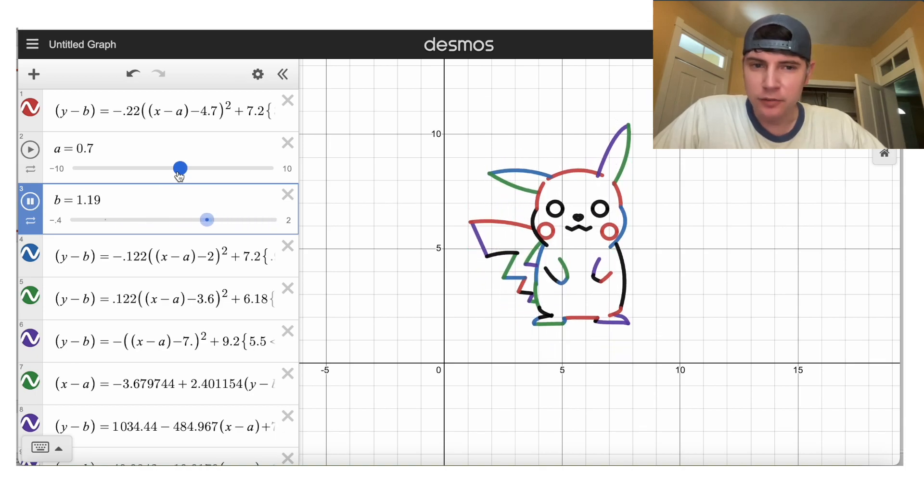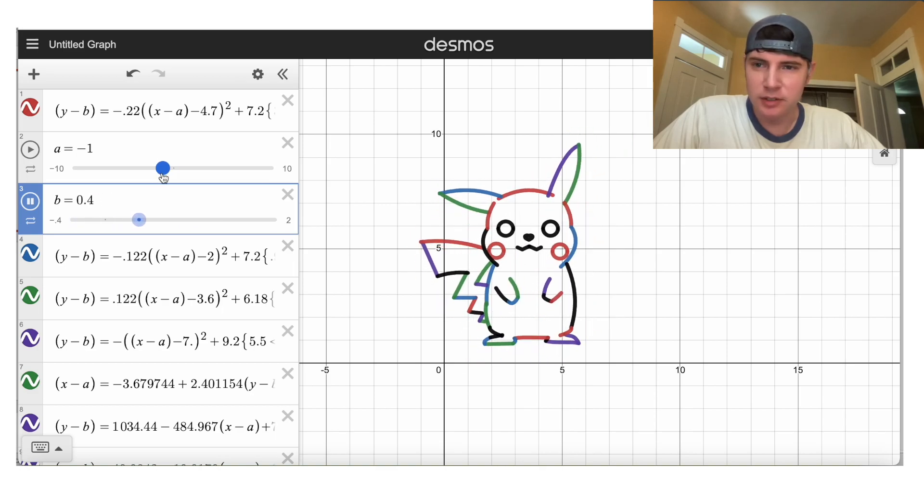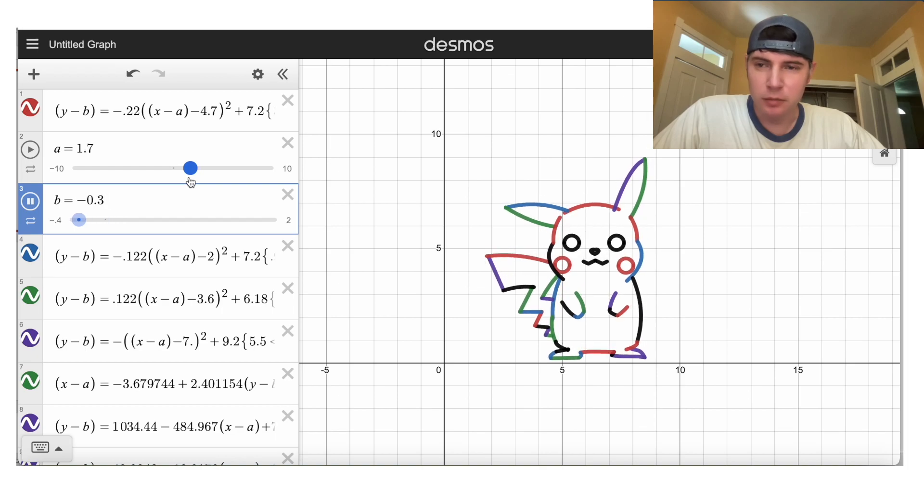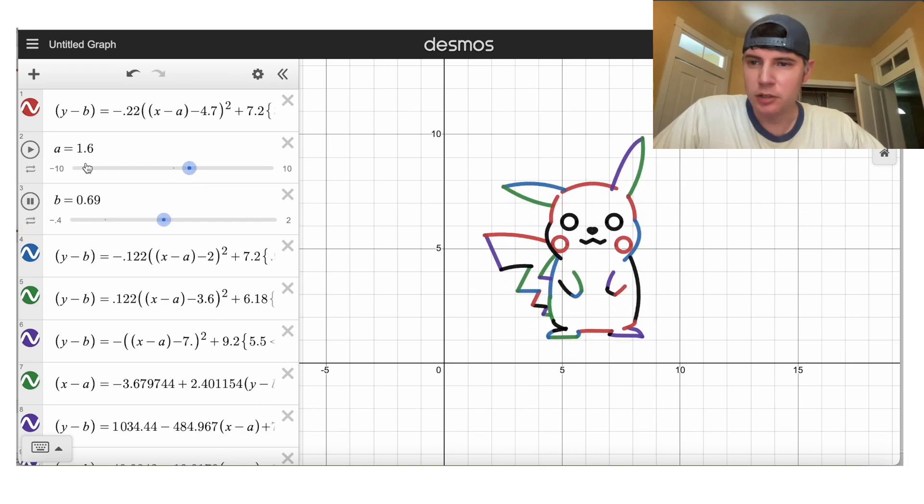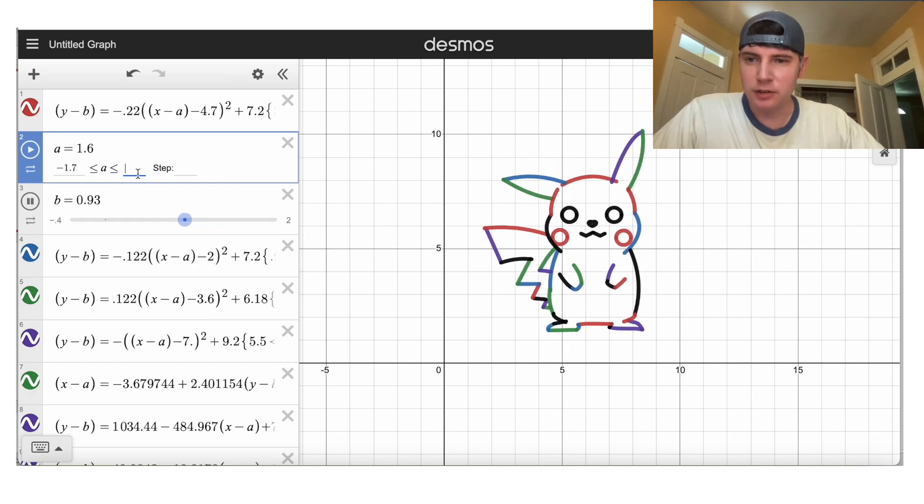And now for the A, how far left and right do I want him to go? I'll have him go over to negative 1.7, maybe positive 1.7, get some symmetry. Sure, let's do that. So negative 1.7 to positive 1.7.